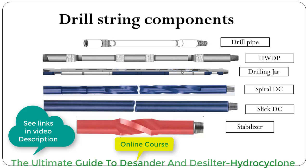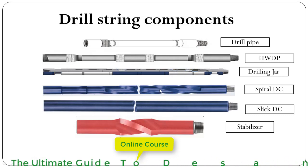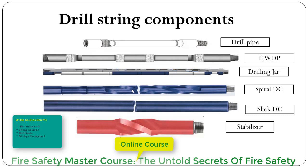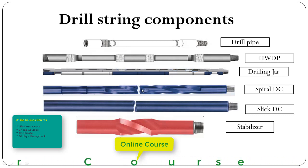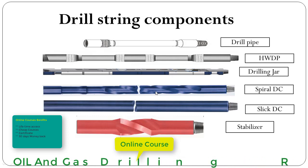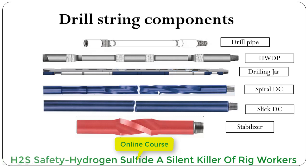The drill collar can be a spiral drill collar or a flush/slick drill collar. Spiral drill collars have a spiral-shaped profile on their body. Drill collars are heavier compared to the heavyweight drill pipe, and they have very thick steel walls. They are used to provide weight on the bit. Spiral drill collars are preferable as they help prevent differential sticking.